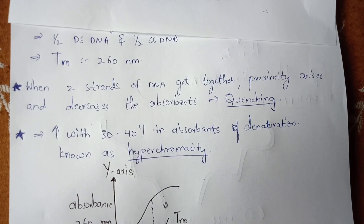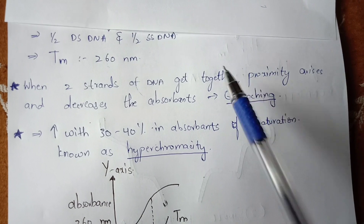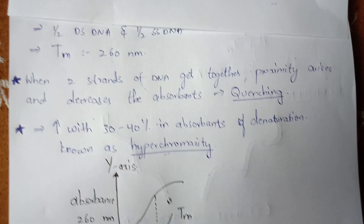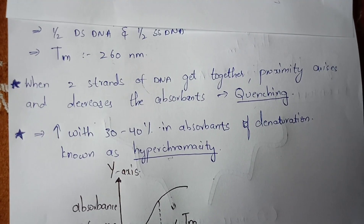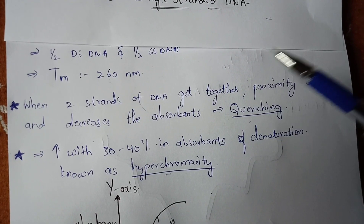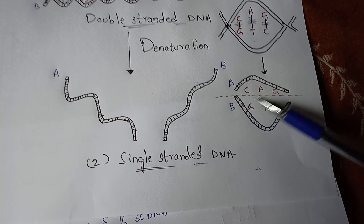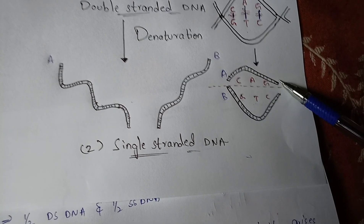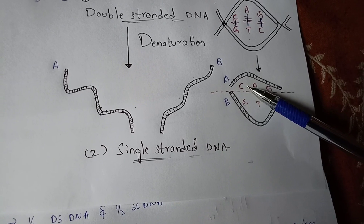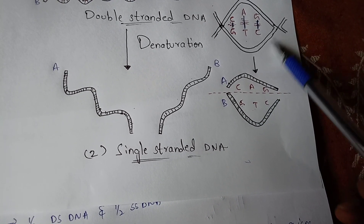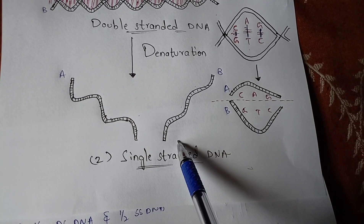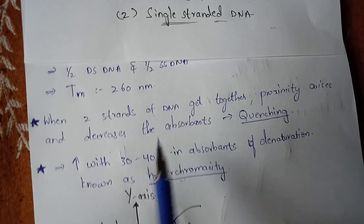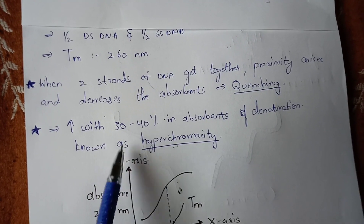This concept of quenching will be asked in MSc entrance examinations. They will give options like quenching and hyperchromicity to confuse you — the answer is quenching. Quenching is when two strands of DNA come together; the proximity between the base pairs causes the hydrogen bonds to break down, finally leading to the formation of two single-stranded DNAs.